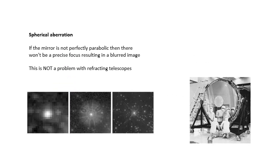What is a problem with reflecting telescopes is something called spherical aberration, and that's basically if the mirror isn't perfectly parabolic. Maybe it's been misaligned, maybe it's been transported and knocked out of position, maybe it hasn't been very well made. And if it's not perfectly parabolic, then there won't be a precise focal point and the rays of light will converge at different places and you'll end up with a blurred image.